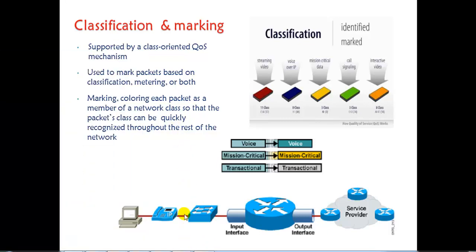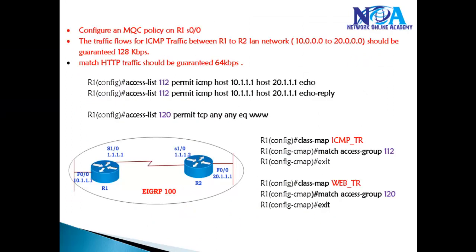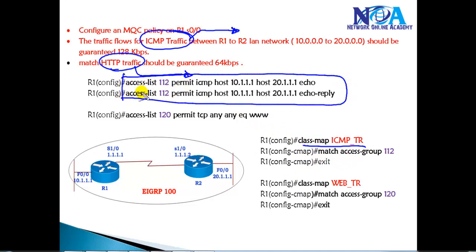To classify the traffic we can use something called class maps. If you remember in the previous section, we created an ICMP traffic categorized in one class map and then HTTP traffic in a separate category. We can create a class map where we can also create an ACL to match any specific traffic based on the source and destination and call this particular ACL inside this class map.